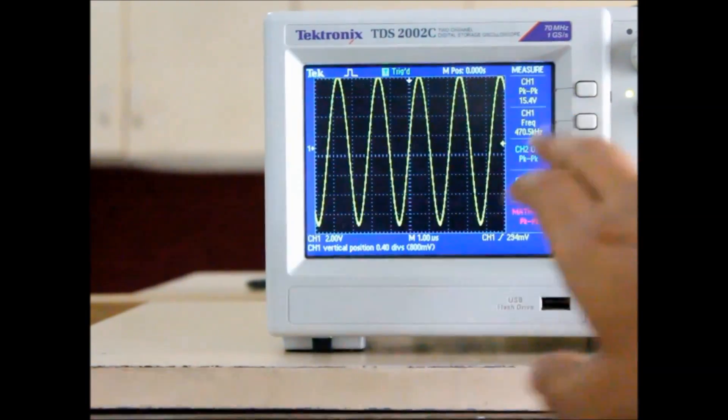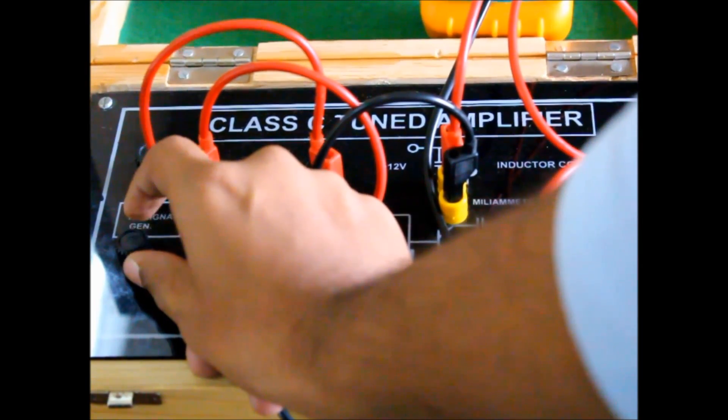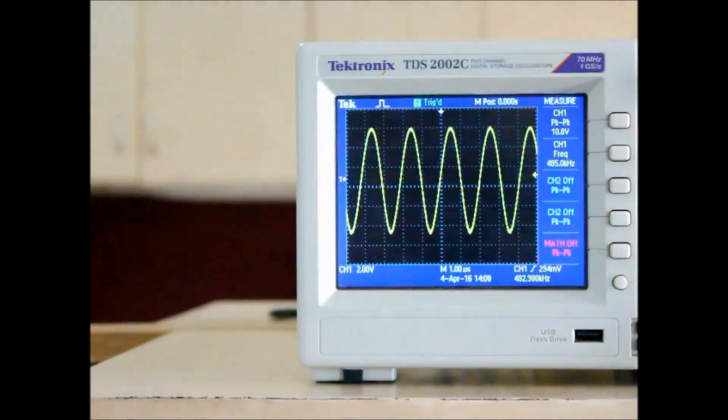So now we have tuned frequency as 470 kilohertz. Now we will take it at 460. Adjust the frequency to 460 and again take the same readings for voltage and current on the DMM.